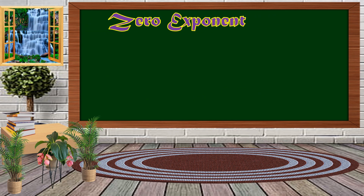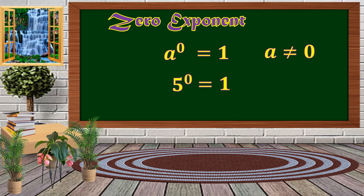Next is the Zero Exponent law. This law states that any number raised to 0 is equal to 1, except when 'a' is equal to 0 — 'a' should not be equal to 0. For example, 5 raised to 0 equals 1.